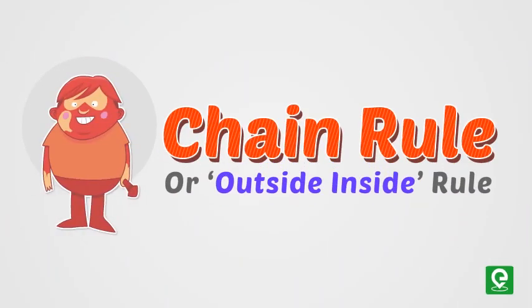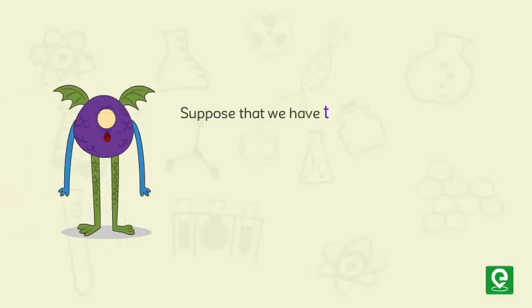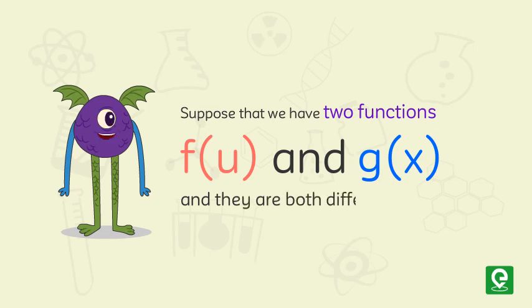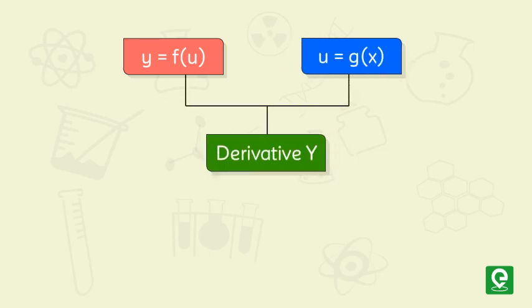Chain rule or outside inside rule. Suppose that we have two functions f(u) and g(x), and they are both differentiable. If y is equal to f(u) and u is equal to g(x), then the derivative of y...